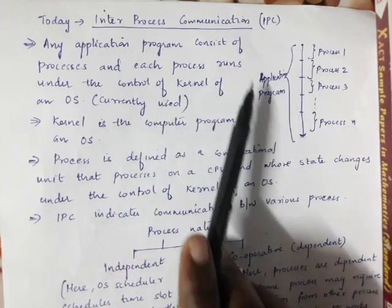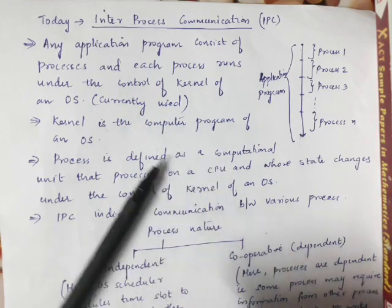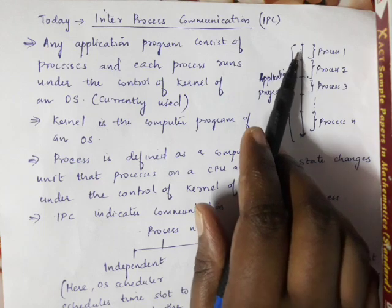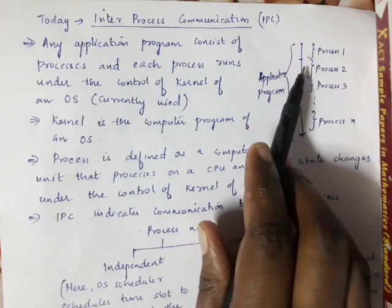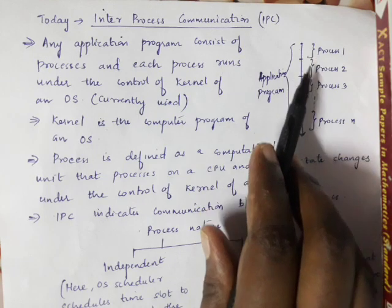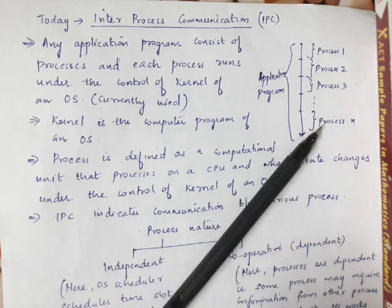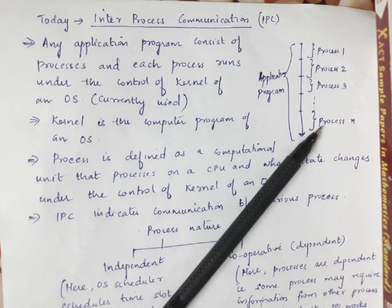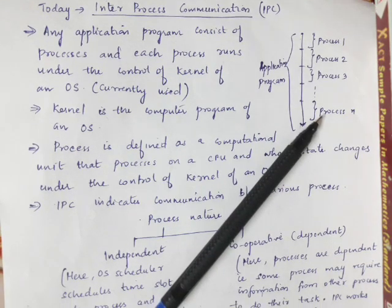These are the main concepts behind inter-process communication. Inter-process communication is the mechanism for communication between different processes — for example, process 1 and process 2 can communicate, and that mechanism is called inter-process communication. Communication means giving some information to some other location, such as process 1 and process 3 sharing information with each other.